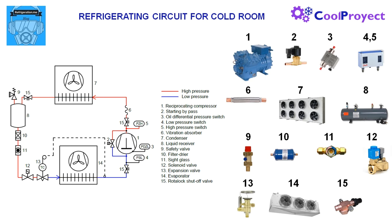Number 10 is the filter dryer, used to catch moisture and solid particles — and sometimes acids — from the refrigerant. This must be replaced periodically to ensure proper functioning. Number 11 is a sight glass to check we don't have flash gas in the liquid line, as this would cause problems with the expansion valve.